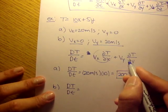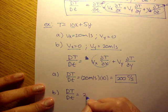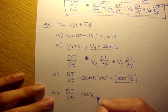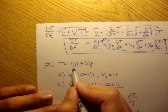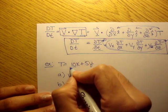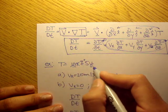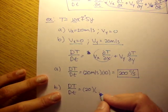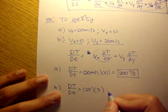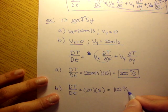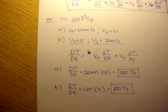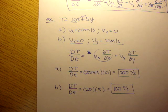So we'll just have to worry about this. Our Vy is 20. And the partial of T in respect to y, so this time, in respect to y, well, that's just 5. Right? So this is 0. That's just 5. The partial in respect to y. And that gives us 100 centigrade per second. And that's the material derivative.